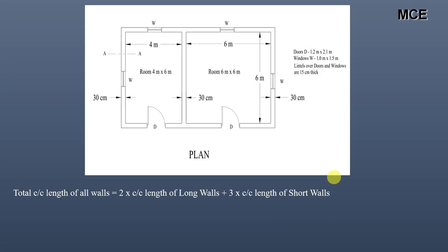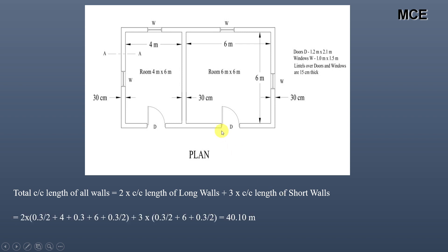First we will find the total center length of the building. The total center length equals two times the center length of the long walls plus three times the center length of the short walls. Long walls are taken along the longer dimension of the building — in this case we have two long walls. Short walls are along the shorter dimension — in this case we have three short walls.